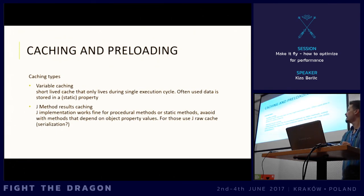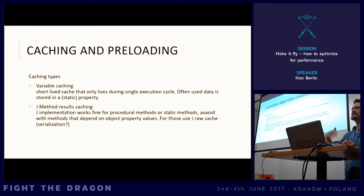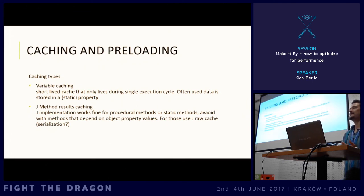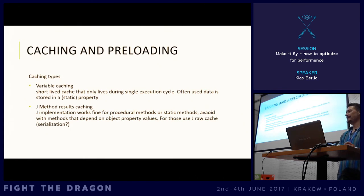Caching types: first is variable caching — a short-lived cache stored in memory. You get some results, store them in a variable, and use them through the execution cycle. If you have only one instance of the class you can use a normal method; if you have multiple instances and want to keep data across them, you need to use static variables.